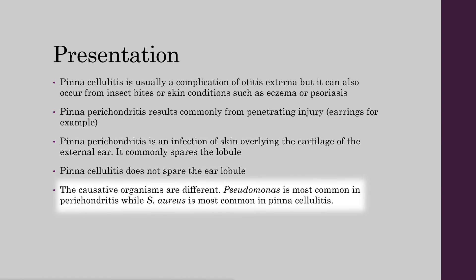The causative organisms that cause these two presentations are different as well. With perichondritis you will see Pseudomonas more commonly, while in pinna cellulitis it is usually Staphylococcus aureus.